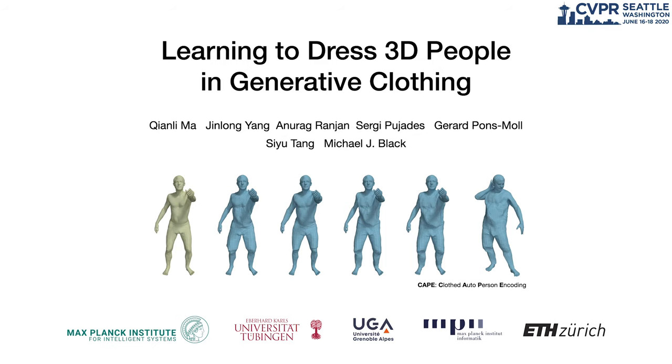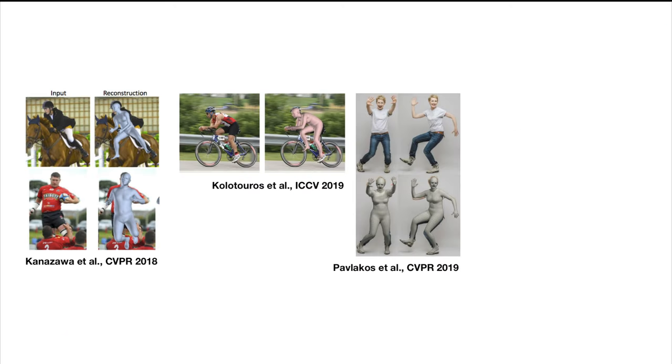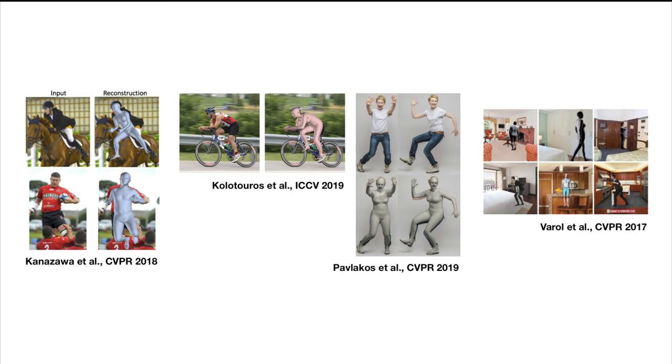Parametric 3D human body models are used in many applications, such as 3D body reconstruction from a single image and synthetic data generation.